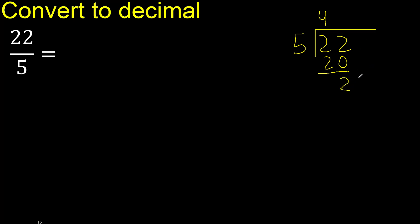Next — there is no next number, therefore complete. Always complete with 0, here with a point — 0, point.